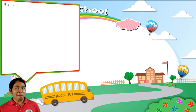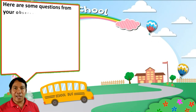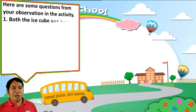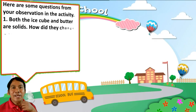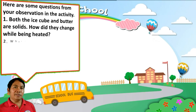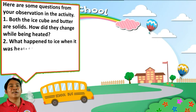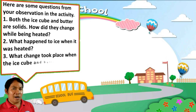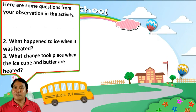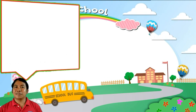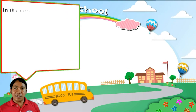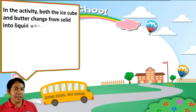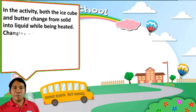Here are some questions from your observation in the activity. Both the ice cube and butter are solids. How did they change while being heated? What happened to the ice when it was heated? What change took place in the ice cube and butter? Both the ice cube and butter changed from solid into liquid while being heated.